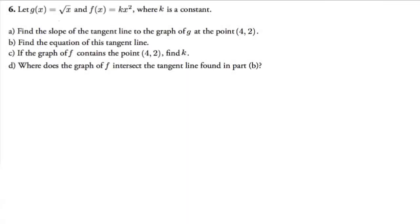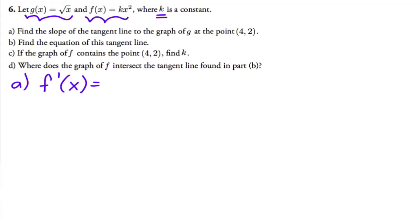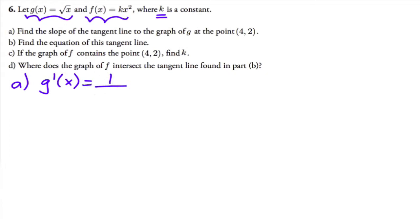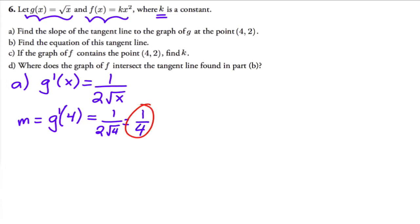Now we have a new problem with two functions: g(x) equals square root of x, and f(x) equals k times x squared where k is a constant. The first part says find the slope of the tangent line to g at the point (4, 2). To find the slope I need the derivative: g'(x) equals one over two square root of x. Plugging in x equals four gives one over two times square root of four, which equals one fourth.